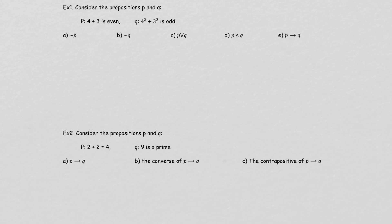So, negations. This is going to be 'not P.' How are we going to write that? If we have not P, we would say '4 plus 3 is not even.' Remember, this P statement was false, so the not P statement should be true.